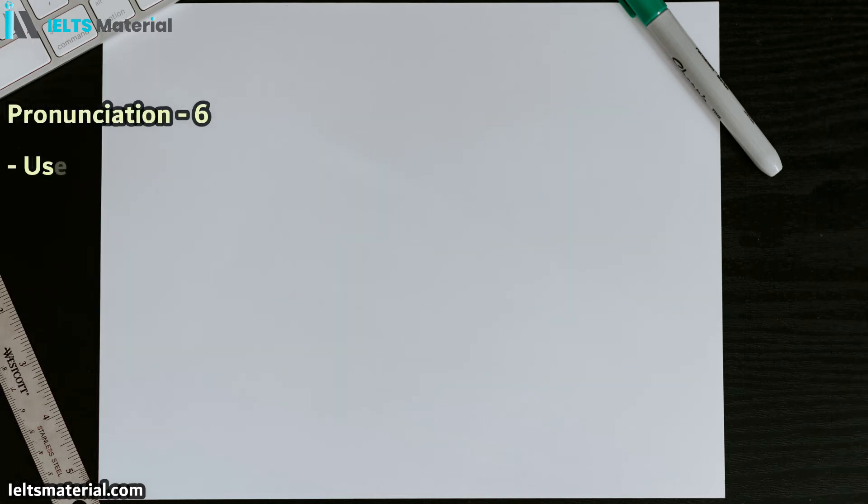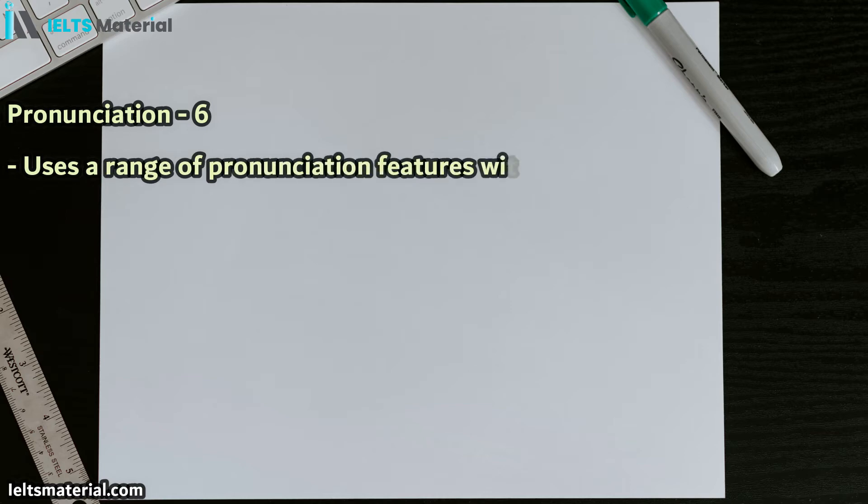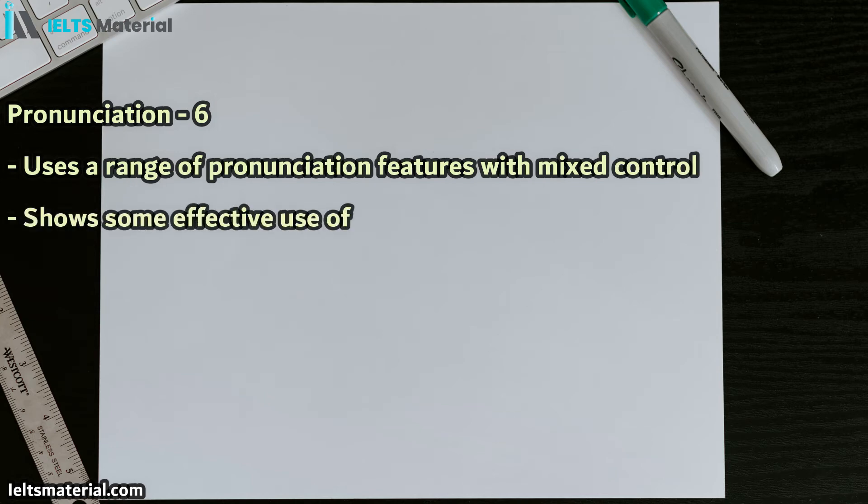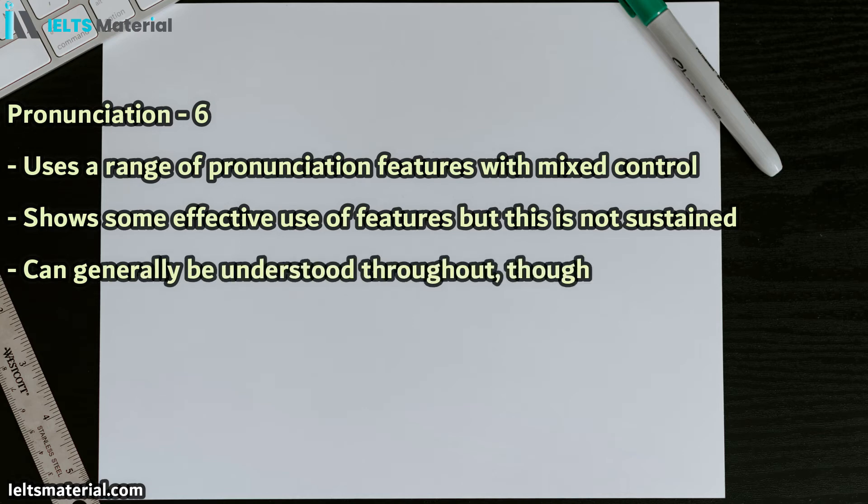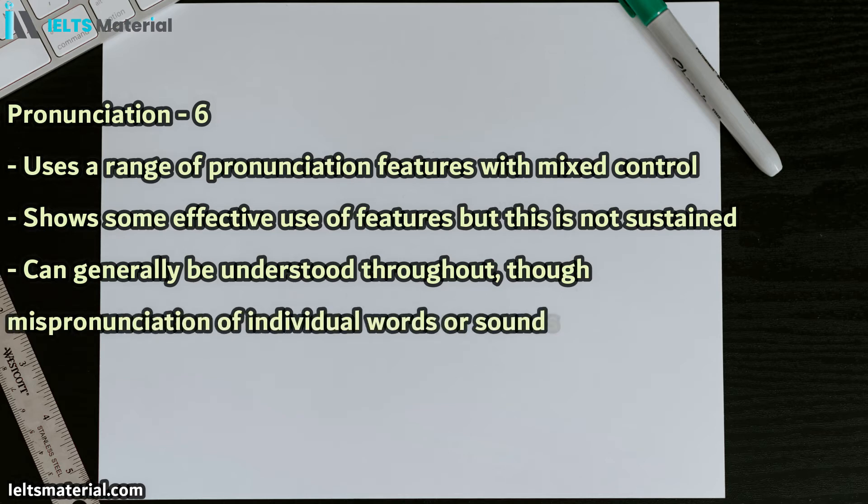And for a band 6 of pronunciation, you need to use a range of pronunciation features with mixed control. This means basically able to connect sounds, and you can show some effective use of features, but this is not sustained. Again, you don't have to be perfect, but you do need to have bits of speaking where your pronunciation is okay. And, you can be generally understood throughout, though mispronunciation of individual words or sounds reduces clarity at times. This means your pronunciation might cause a little bit of confusion or a little lack of clarity. So that's what you can expect at pronunciation band 6.